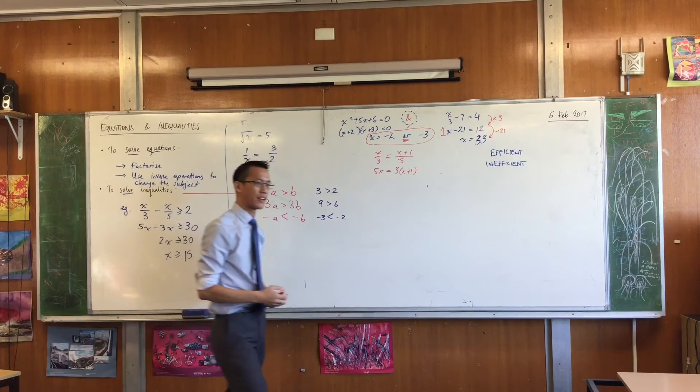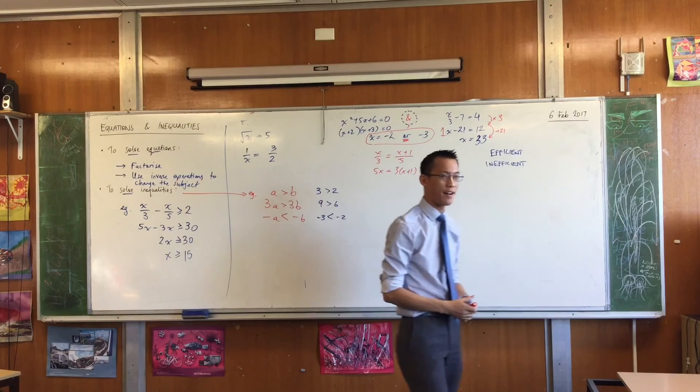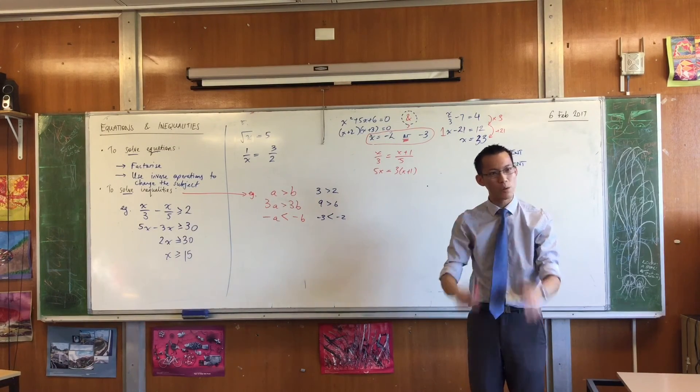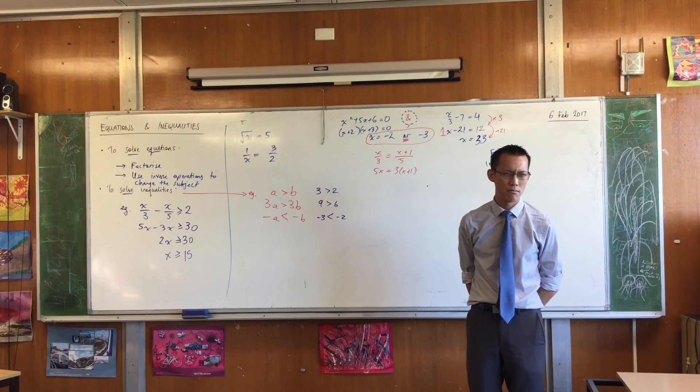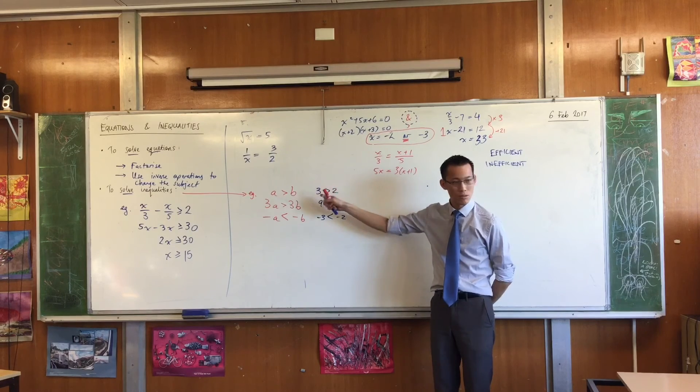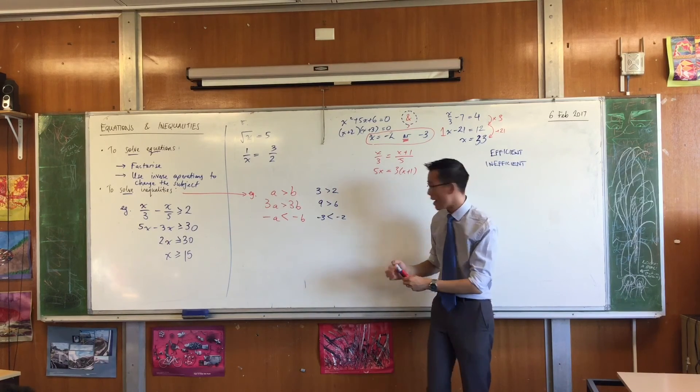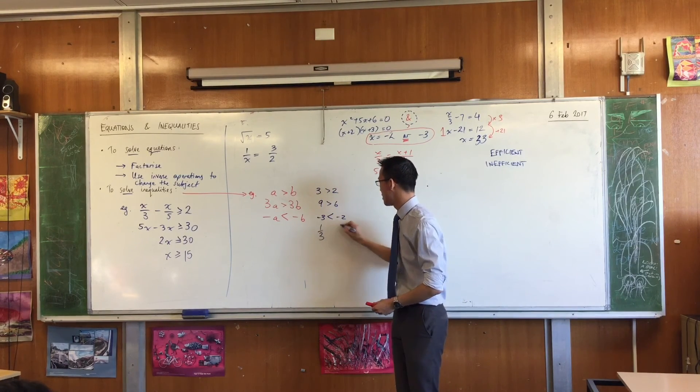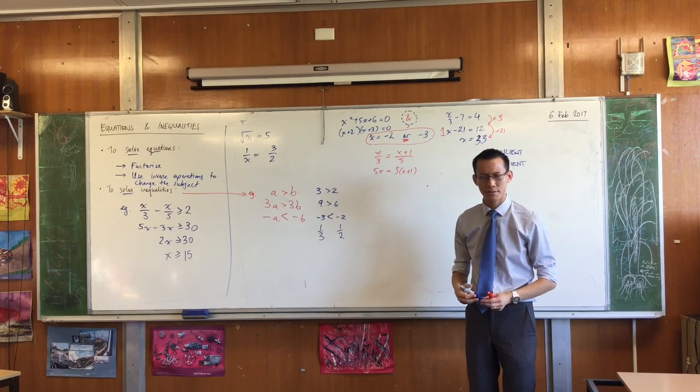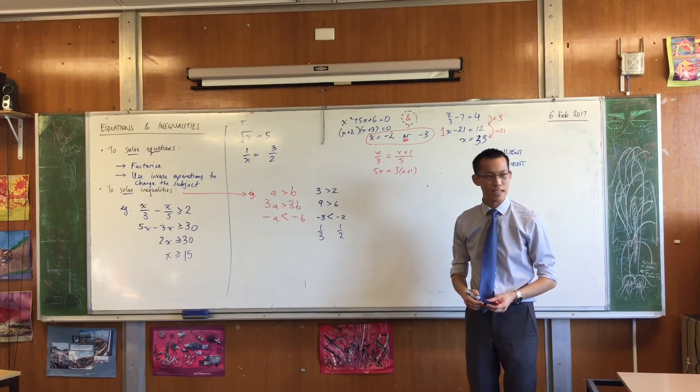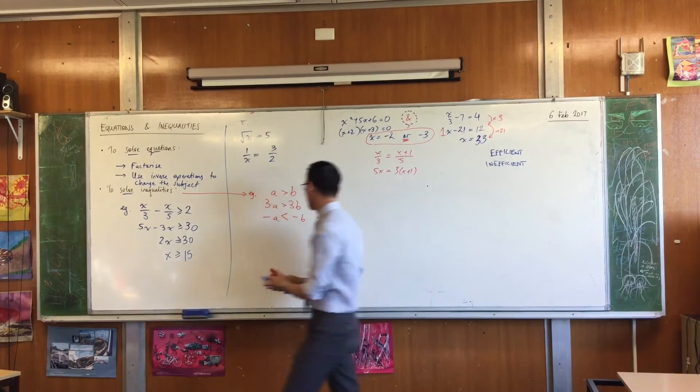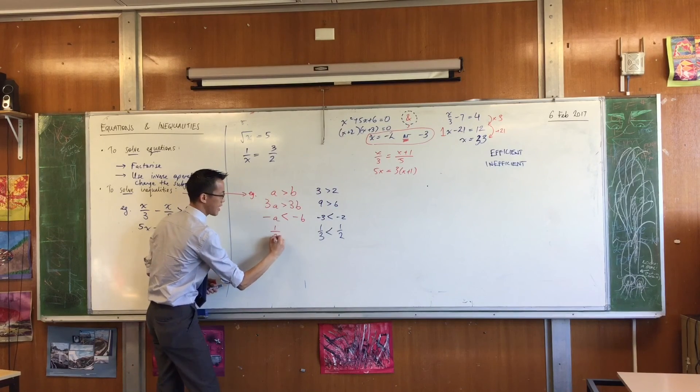The reason why is because these things are actually completely different to these things. Even though so many things can be the same, they're actually fundamentally different objects. So multiplication by negative. What else do you notice on the board might go a bit awry if you have the same operation on both sides? Three bigger than two. So what about a third and a half? Is a third bigger than a half? It's not is it? It's also switched around. So if you take reciprocals, it's the same deal.